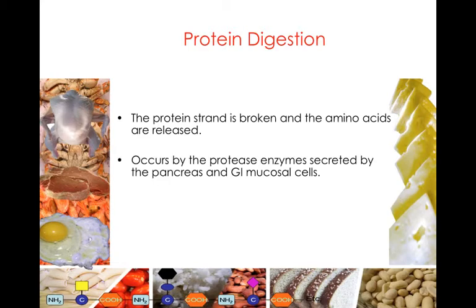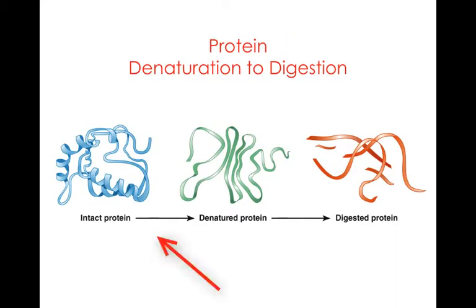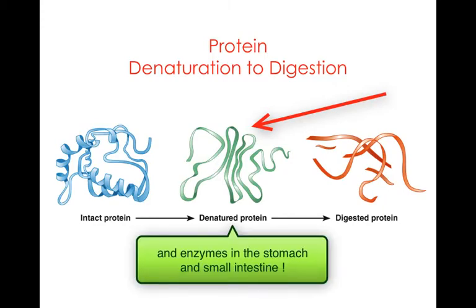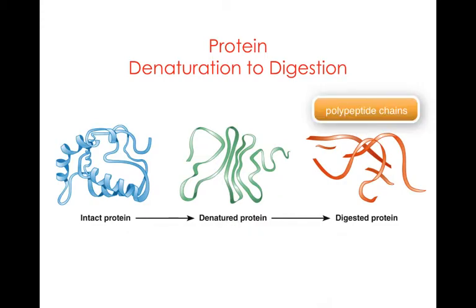This occurs by enzymes that are secreted in the pancreas and on the cells that line the gastrointestinal tract. These are called protease enzymes — they break down proteins. The protein chain, or the amino acid chain, is then broken down into individual amino acids that are absorbed across the intestinal cells into the bloodstream, and then transported to the cells to build proteins. We have an intact protein on the left, and during the digestive process that protein is denatured by the acid in our stomach. On the right we now have individual amino acids, or what are called polypeptide chains. These polypeptide chains are then broken down into individual amino acids that get absorbed into the bloodstream and transported to the cells.